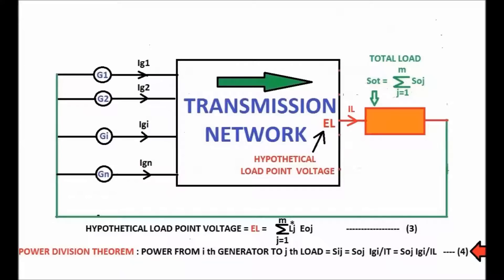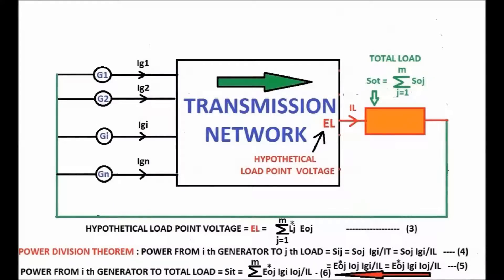The j-th load power can be replaced in terms of j-th load voltage Eoj and load current Ioj, resulting in Equation 5. By adding the share of the i-th generator to each load, we get the share of the i-th generator to the total load SIT, as in Equation 6.